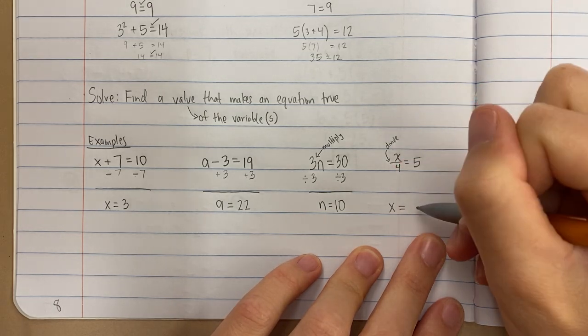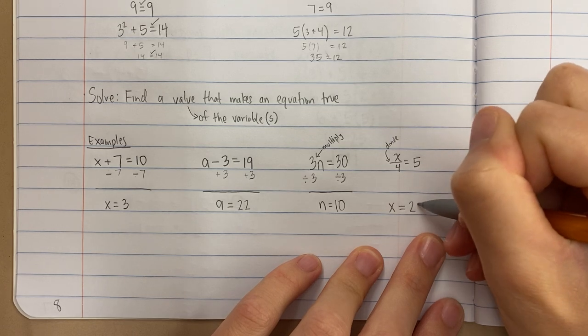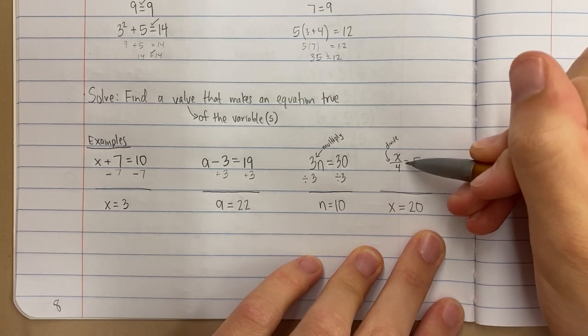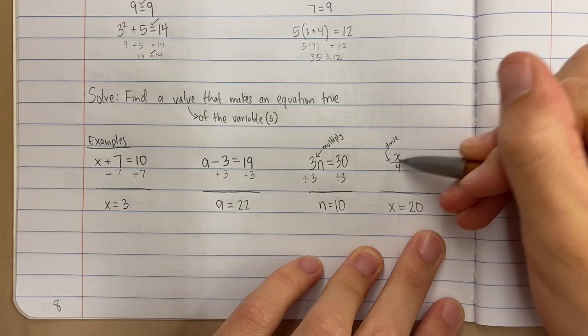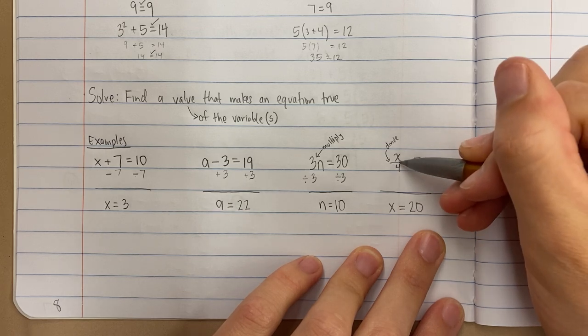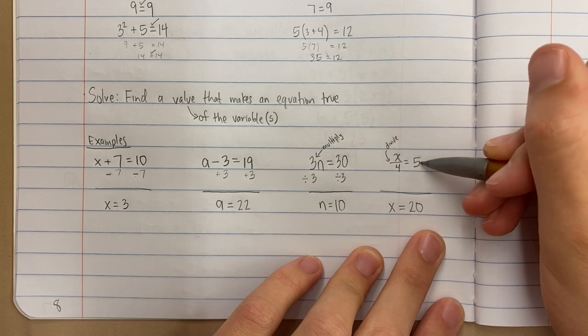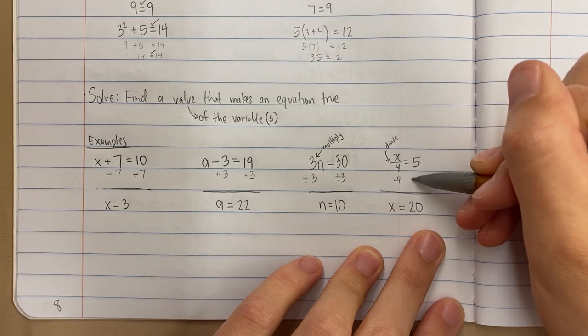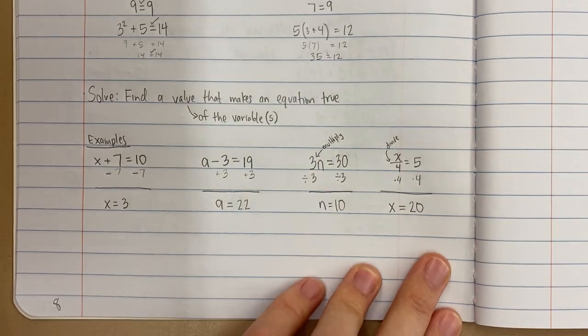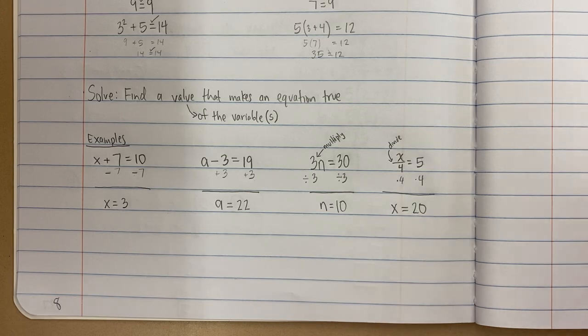Or you might say, let's see what I would have to do. I'd have to kind of do the opposite. This is division. So if I want to find out x, a number divided by 4 equals 5, I'd have to multiply 5 times 4. And this is what you're going to do next.